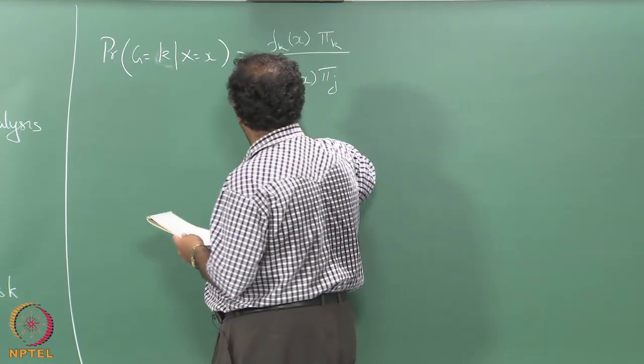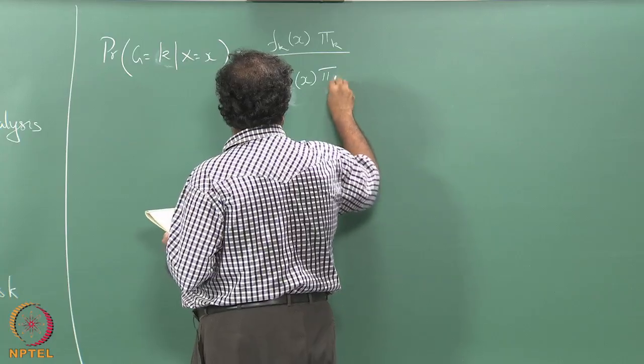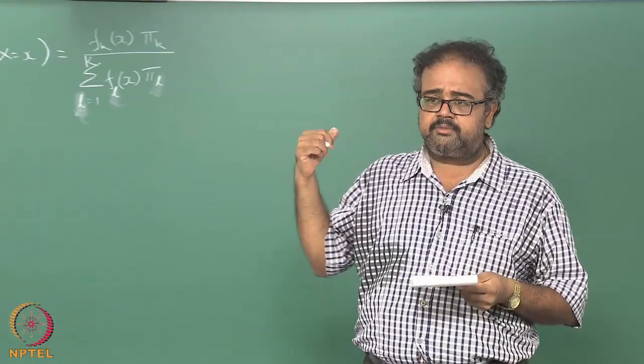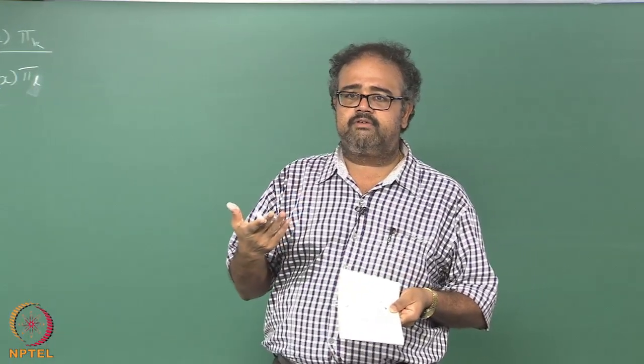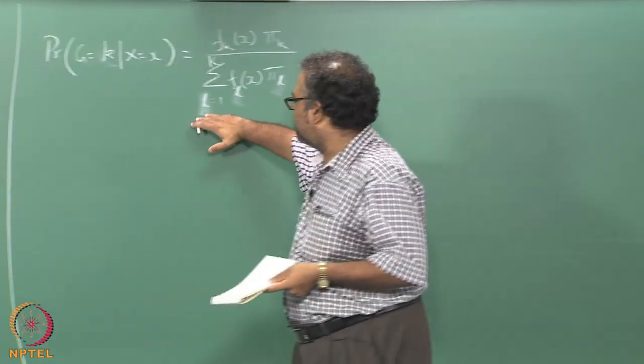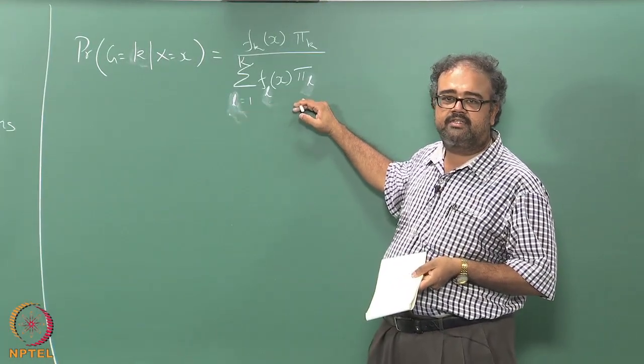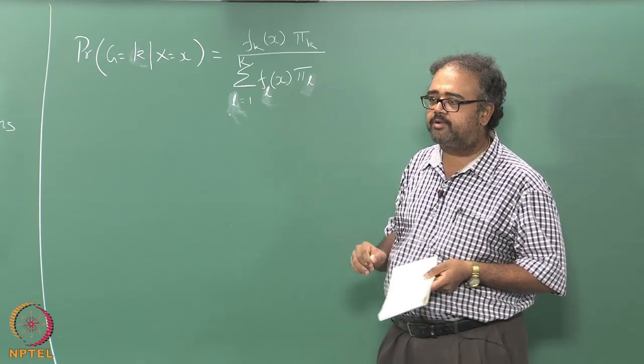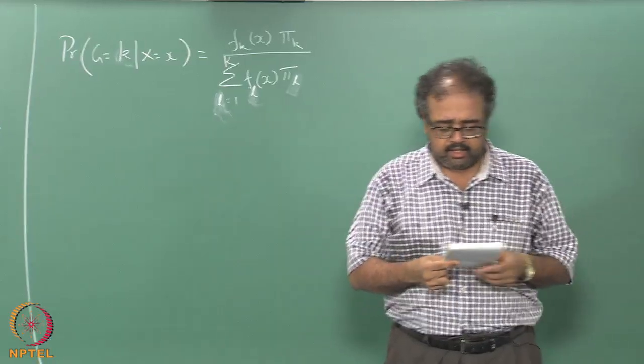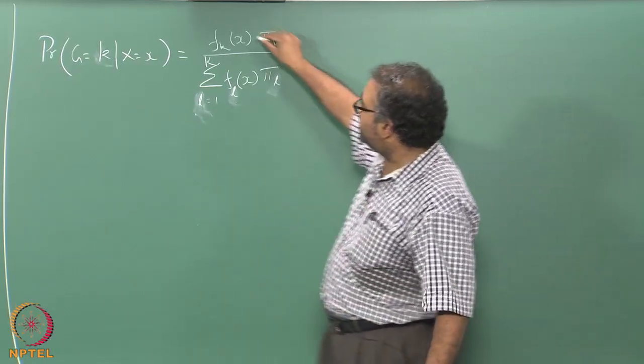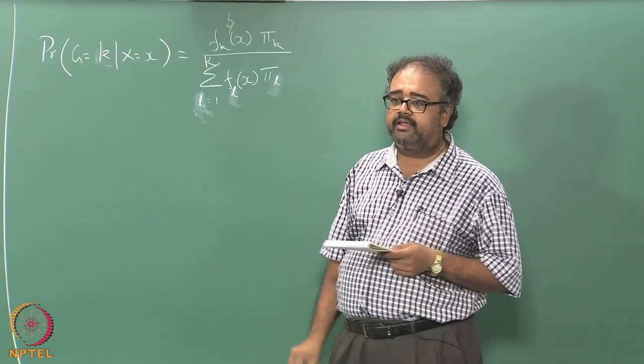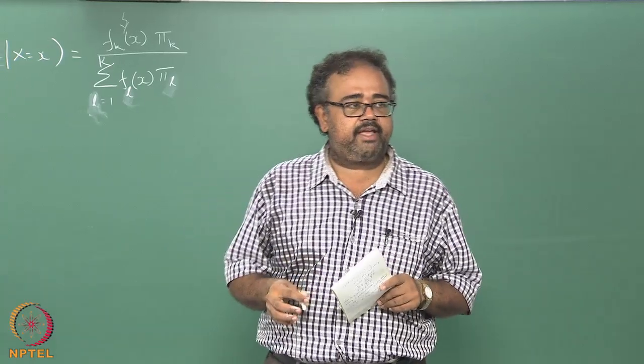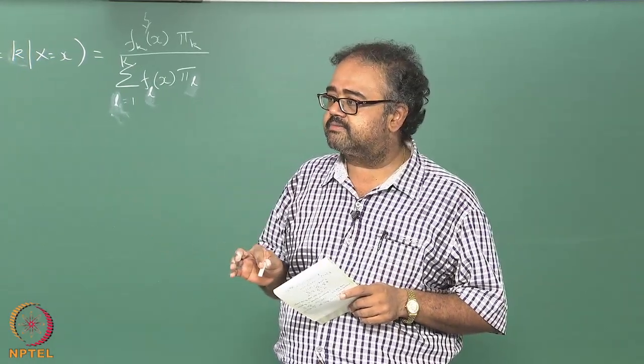You do not need the probability of the data - I can always fake that by saying that since the data has to belong to some class, I can just sum over all the classes and I will get the probability of the data. So we're essentially marginalizing over class. Now depending on the kind of assumptions we make for our fk, the form of fk, we will get different classifiers.